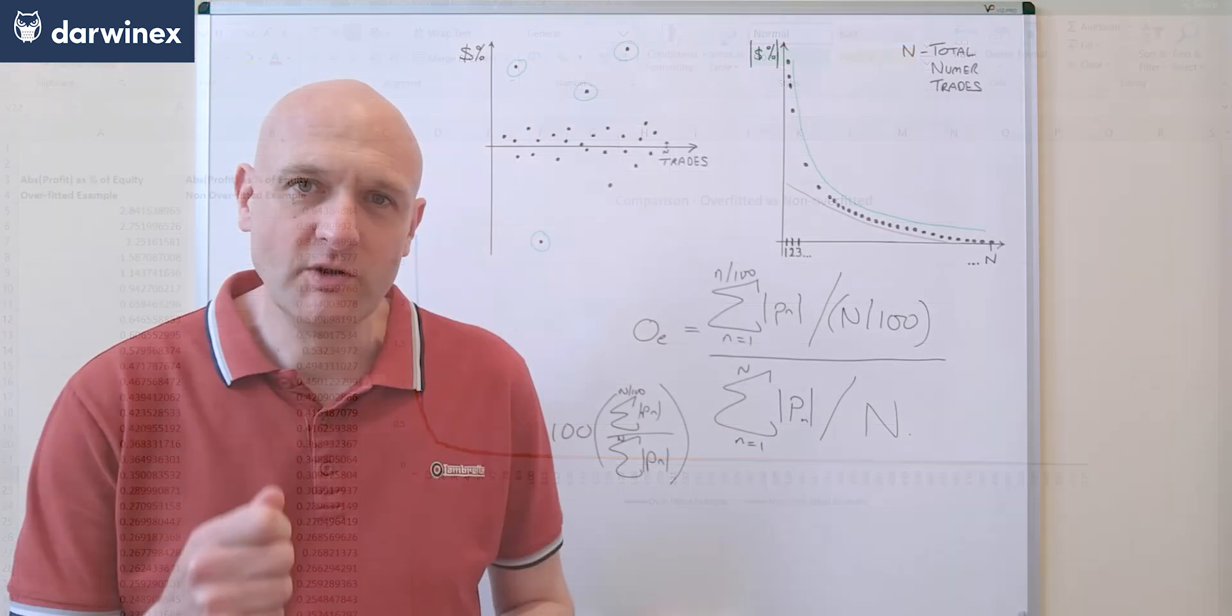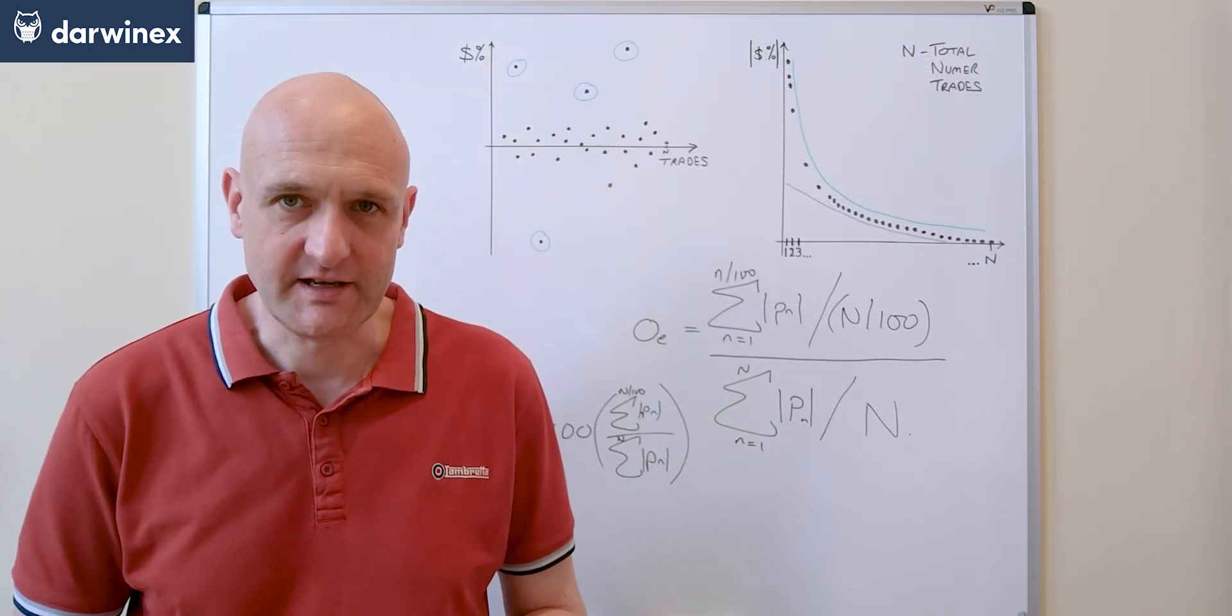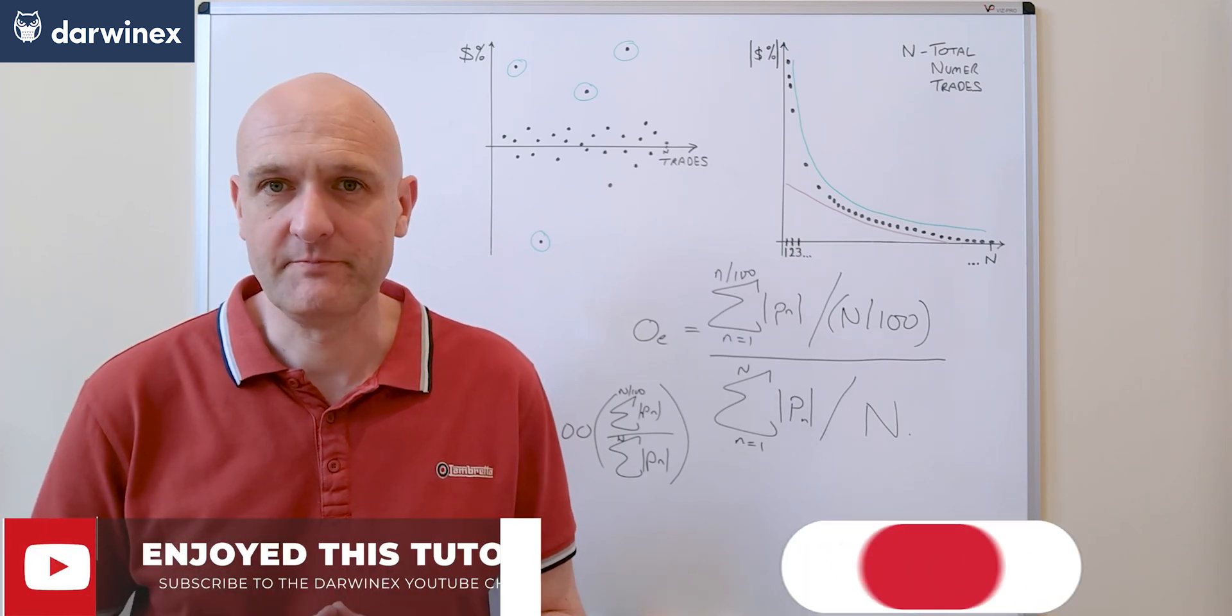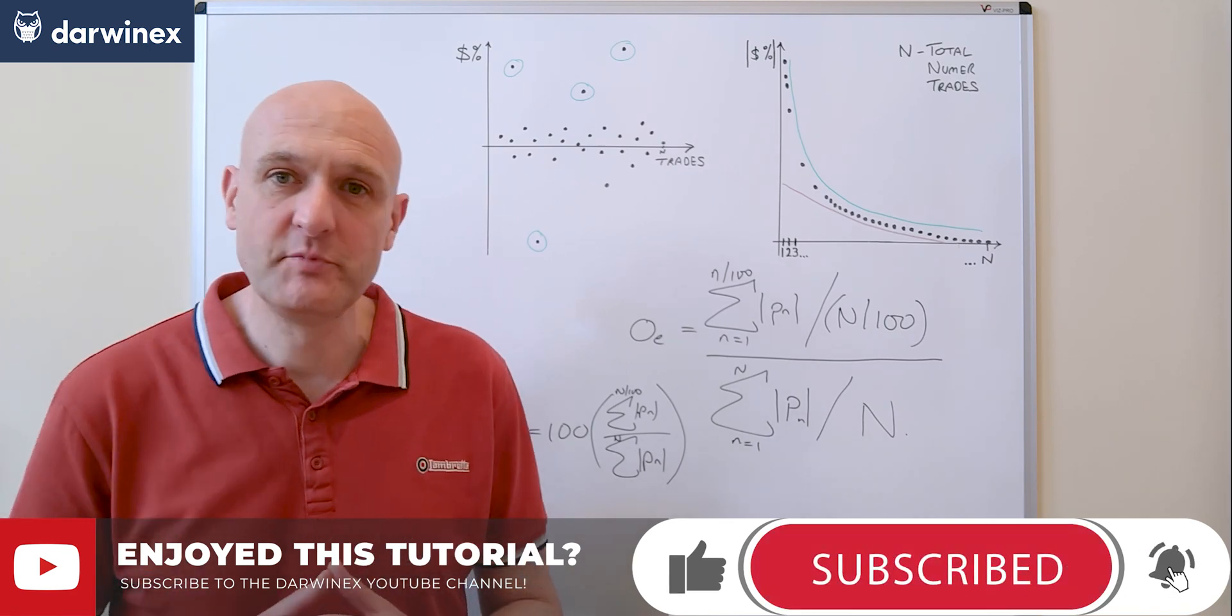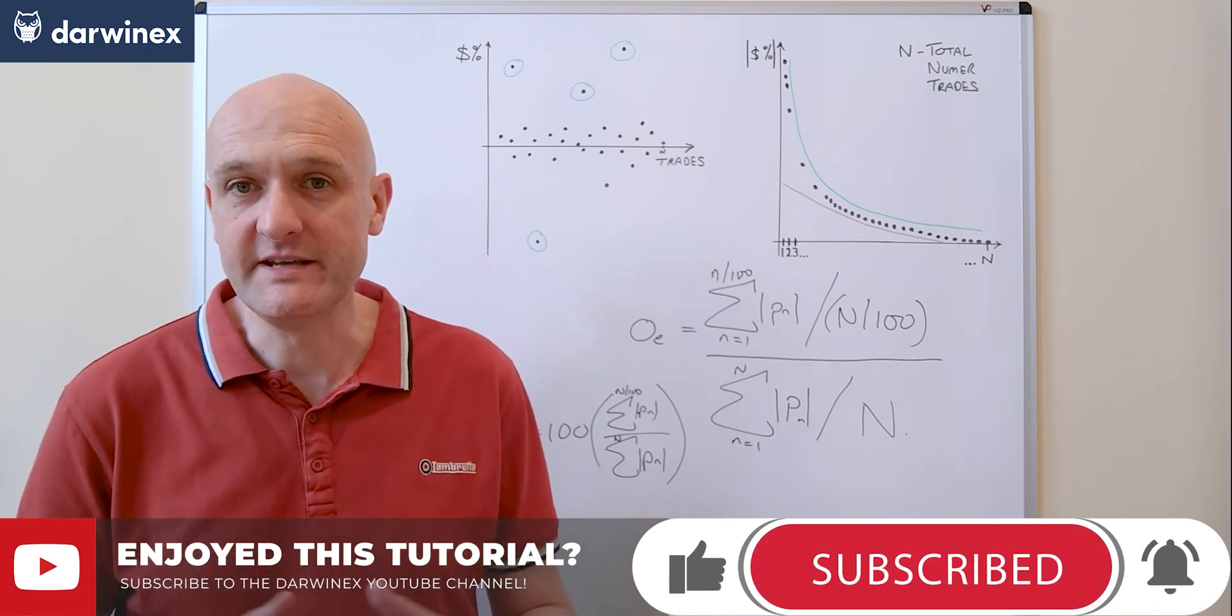So we now have a way of quantifying events overfitting, but what can we do about it? Well actually we have a number of options. Click on this link to part 5.2 and I'll look at each of these in turn.